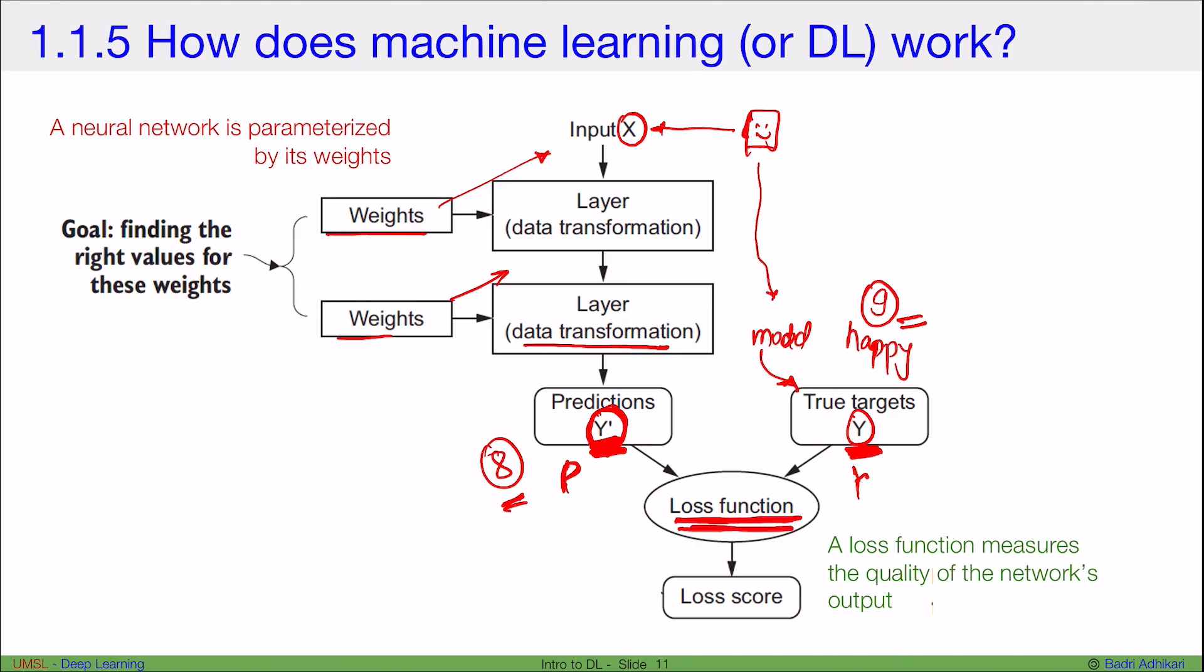So then we calculate something called loss, and your loss function simply calculates the difference between your prediction and your true target and gives you a loss score. Now this loss function measures the quality of the network's output. If this prediction was already 9, then the loss would be 0, usually a very low loss means that the model is doing pretty good.